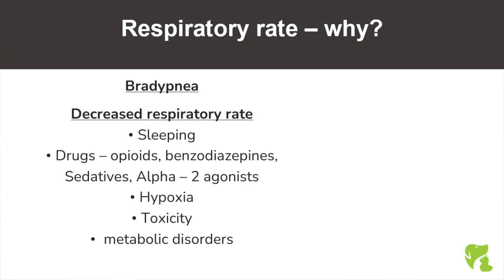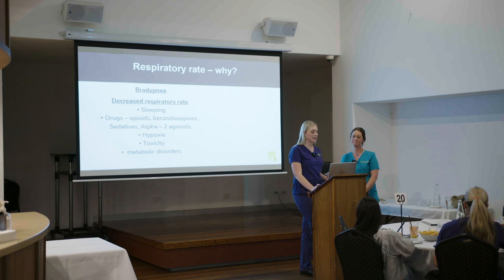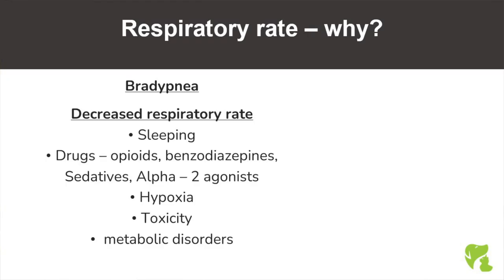Bradypnea is a respiratory rate of less than 10 breaths per minute in dogs and 20 in cats. This can be seen in sleeping or resting patients, and can also be indicative of a metabolic disorder, poisoning or toxicities, or drug reactions. Drugs that can cause a decreased respiratory rate include opioids such as fentanyl, methadone, butorphanol, and buprenorphine; benzodiazepines such as diazepam (Pamlin) and midazolam; sedatives such as acepromazine (ACE or ACP); alpha-2 agonists such as medetomidine (Domitor); and anti-anxiety medications such as trazodone.